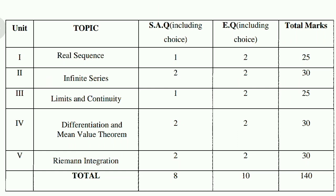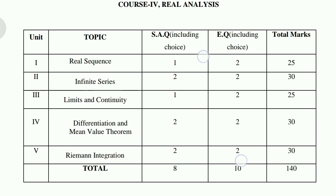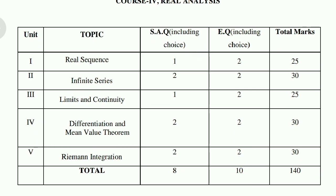Real Sequences has 1 short question and 2 essays — 25 marks total. Infinite Series has 2 short questions and 2 essay questions — 30 marks. Limits and Continuity has 1 short question and 2 essays — 25 marks. Differentiation and Mean Value Theorem has 2 short questions and 2 essays — 30 marks. Chapter 5, Riemann Integration, also carries 30 marks. So the distribution is 25, 30, 25, 30, and 30 marks across 5 chapters.